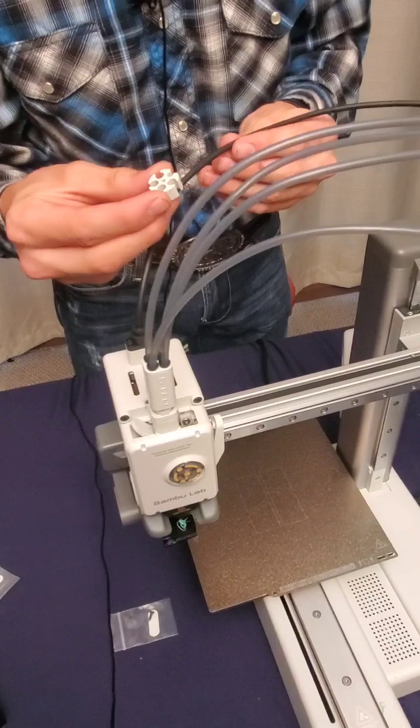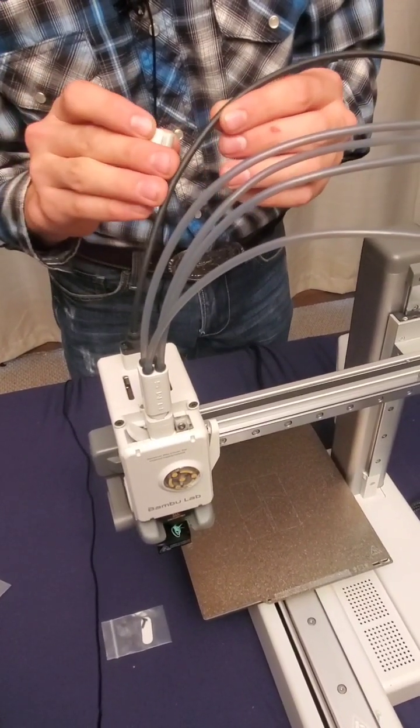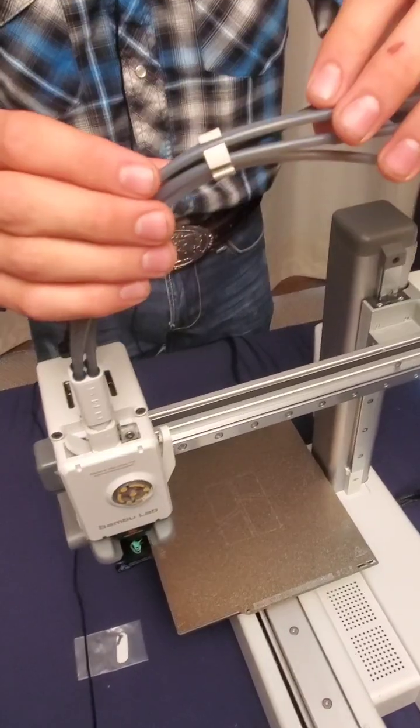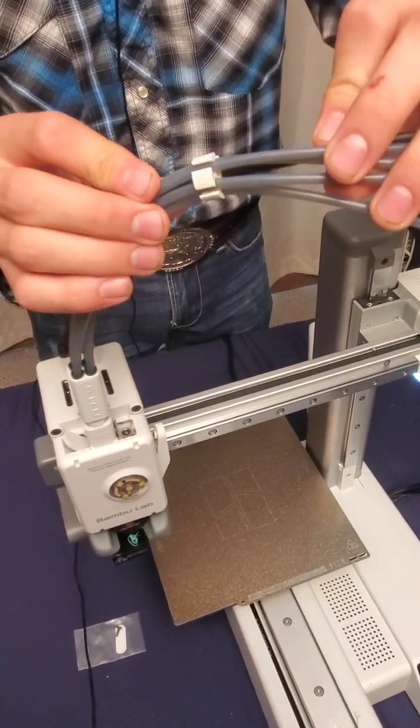We have a little cord organizer. The smallest hole is for the cord. The other four holes are for the PTFE tubes. This is what it should look like right here.